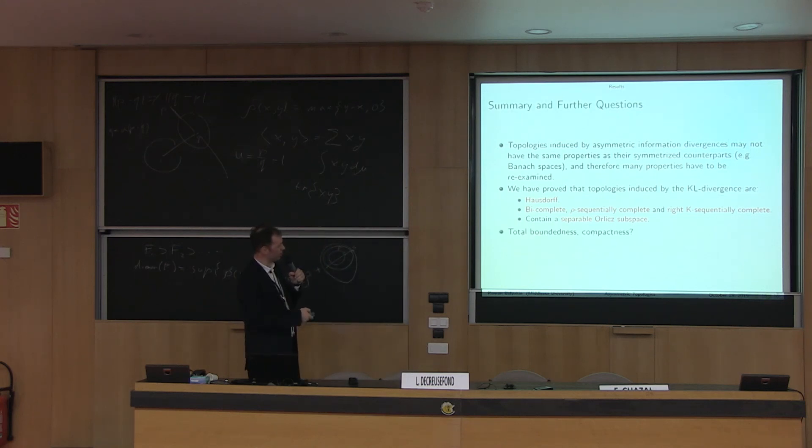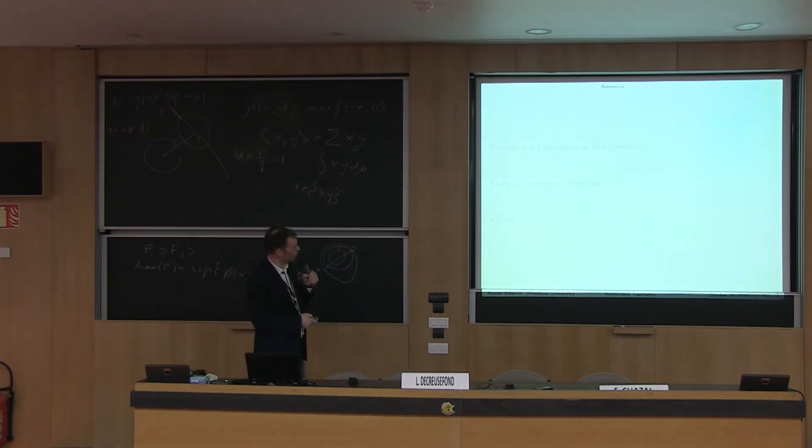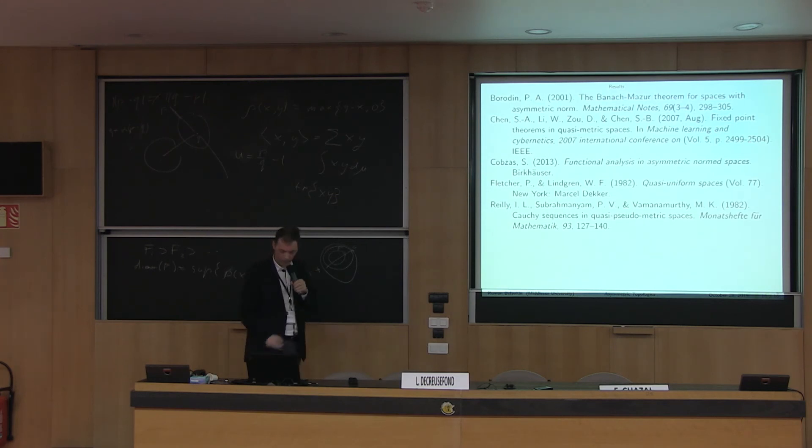I haven't considered total boundedness and compactness, but you're looking at sets or subsets. There are many other interesting questions you can consider: what about other asymmetric information distances like Rényi, for example? They're also asymmetric. What about them? You can apply the same approach. Thank you very much.